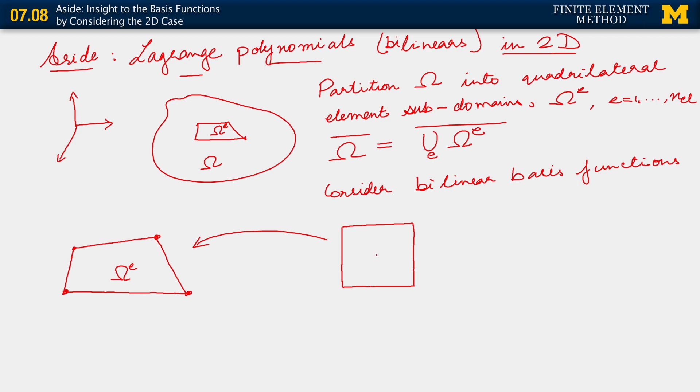It's a square and it lives in a space where the coordinates are labeled xi and eta. Since we are working with bilinear basis functions, or we want to work with bilinear basis functions, we have four nodes, of course, on the physical element. And so on the parent subdomain as well, we have four nodes. And this parent subdomain, you recall, is omega xi. Same notation.